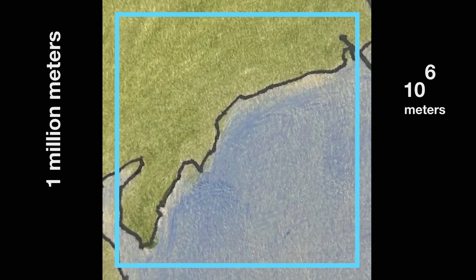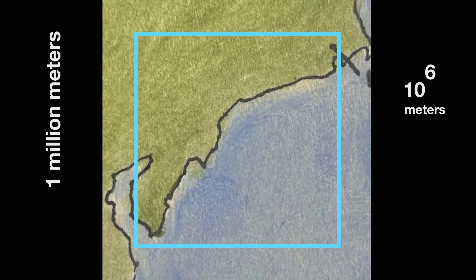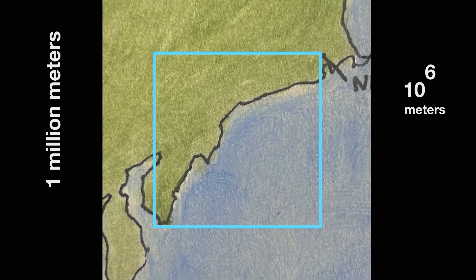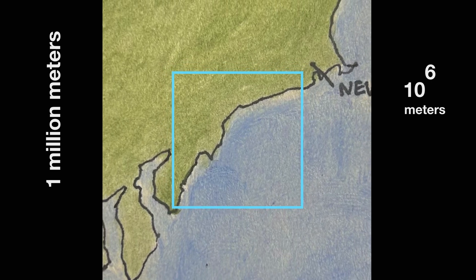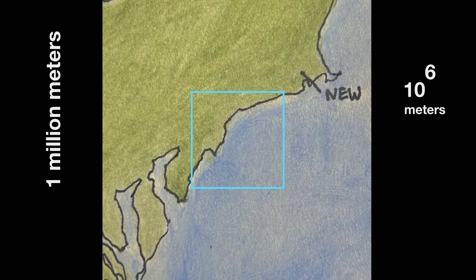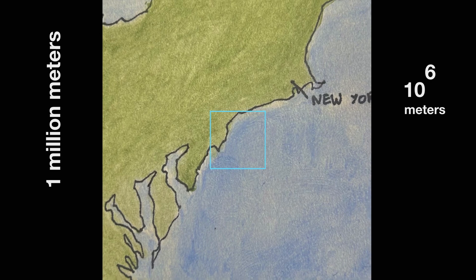We can barely see New York anymore, just small blobs we can make out as a city and the Hudson River. Several states are now visible in one frame. We even start to see some of Canada as we move further out from New York.